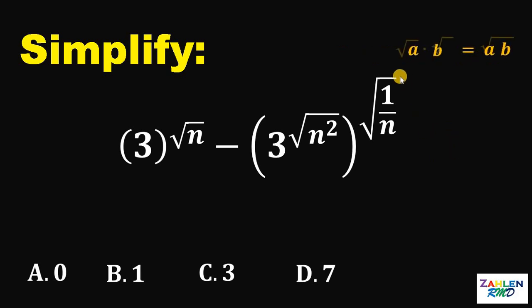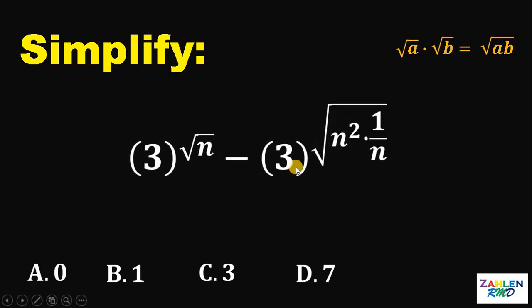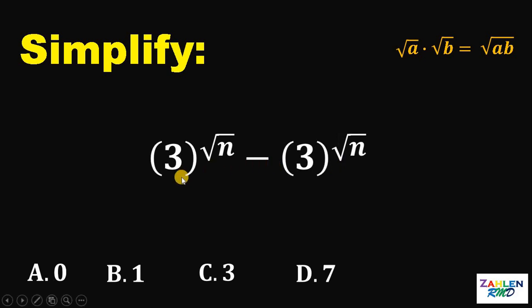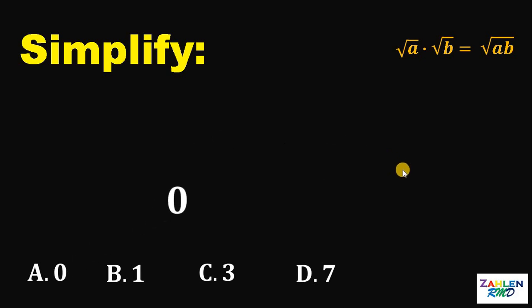Now, again, recall that if we have square root of A times square root of B, this is equivalent to square root of A times B. Now, if we simplify this expression, we need to multiply the exponent. Thus, the second expression can be written as 3 raised to square root of n squared times 1 over n. Now, n squared times 1 over n is just n. Now, we have 3 raised to square root of n minus 3 raised to square root of n, and this is definitely equal to 0.